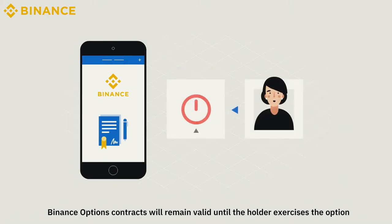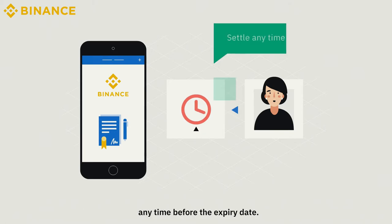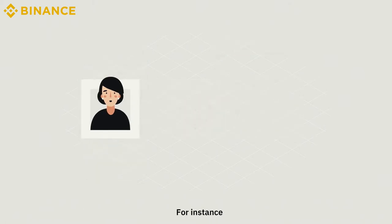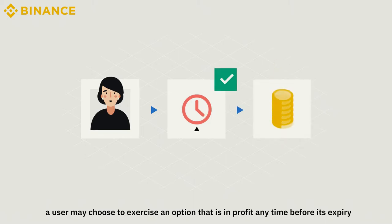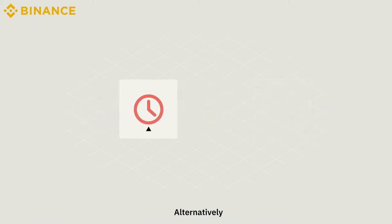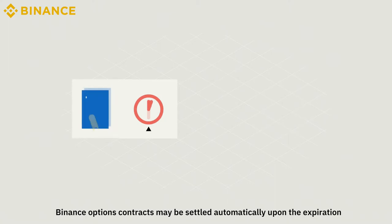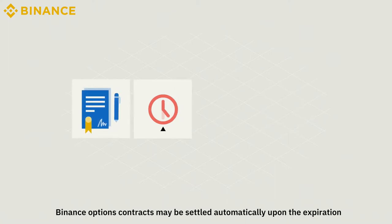Binance Options contracts will remain valid until the holder exercises the option any time before the expiry date. For instance, a user may choose to exercise an option that is in profit any time before its expiry. Alternatively, Binance Options contracts may be settled automatically upon expiration.